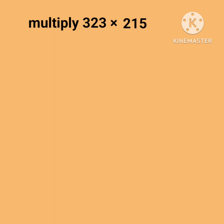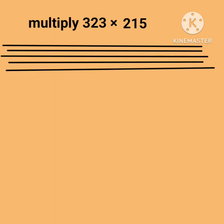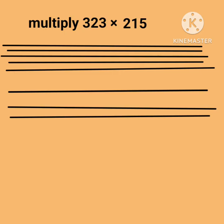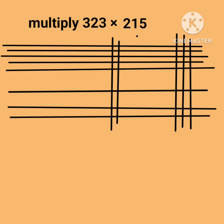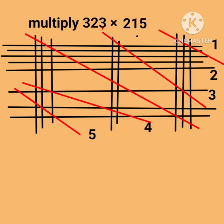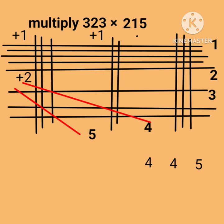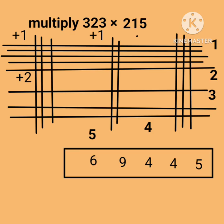Now we take a 3-digit multiplier. For example, multiply 323 by 215. First draw 5 horizontal lines, then 1, and finally 2 horizontal lines. Now draw 3 vertical lines first, then only 2, and finally 3 vertical lines. Counting intersections: first line total is 15 — write 5, carry 1. Second line total 13, add carry 1 equals 14 — write 4, carry 1. Third line total 23, add carry 1 equals 24 — write 4, carry 2. Fourth line total 7, add carry 2 equals 9. Fifth line total is 6, no carry. So the final answer is 69445.